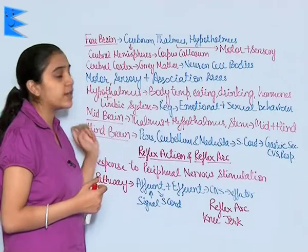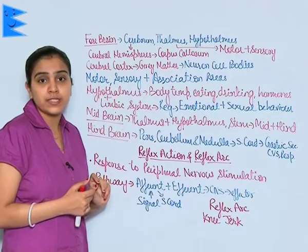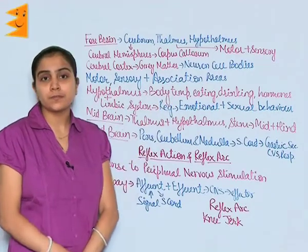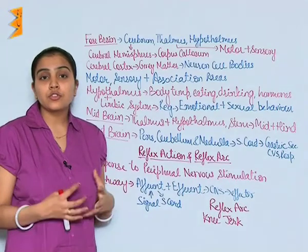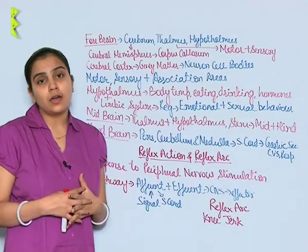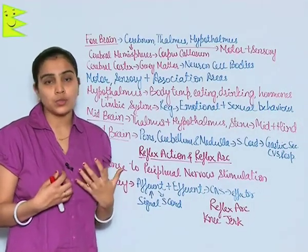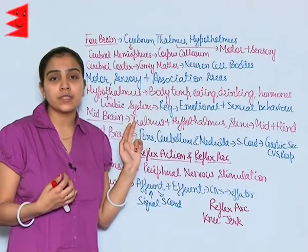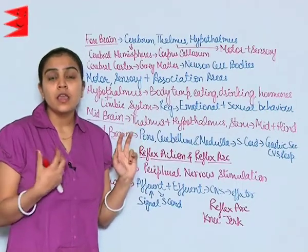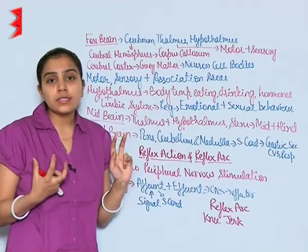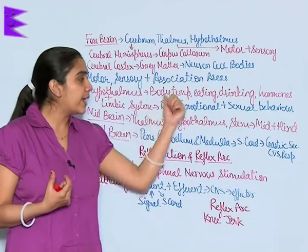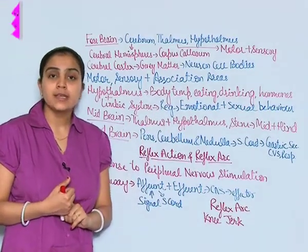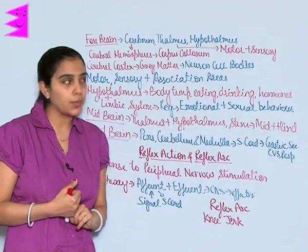The hypothalamus is responsible for maintenance of body temperature, controlling the urge to eat or to drink. It also has certain neurosecretory cells and is therefore responsible for the secretion of certain hormones.